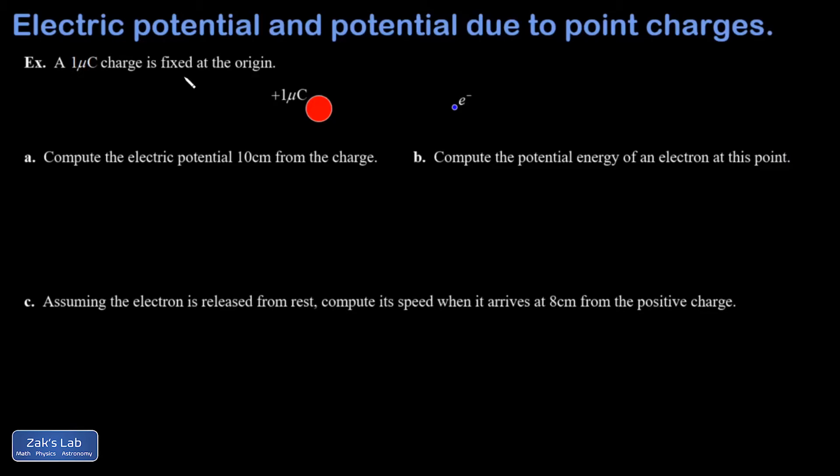So in this example, I have a 1 microcoulomb charge, and I said it's fixed at the origin. This is going to play a critical role in Part C. What I mean is this charge is not allowed to move. It's not allowed to take any kinetic energy.